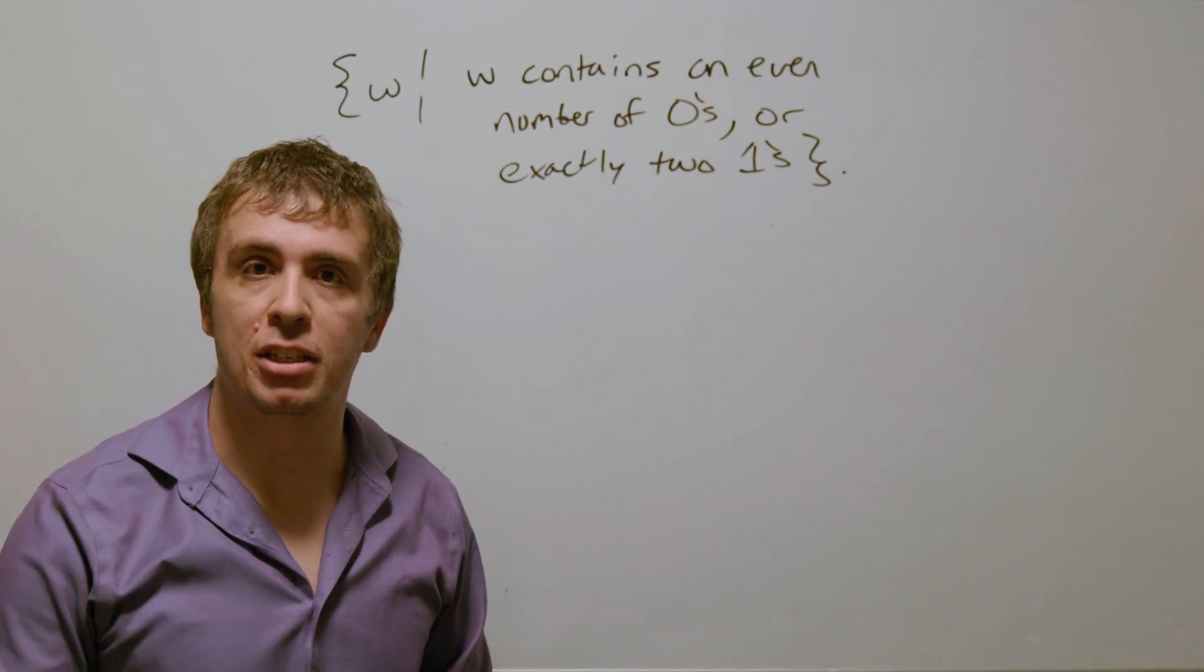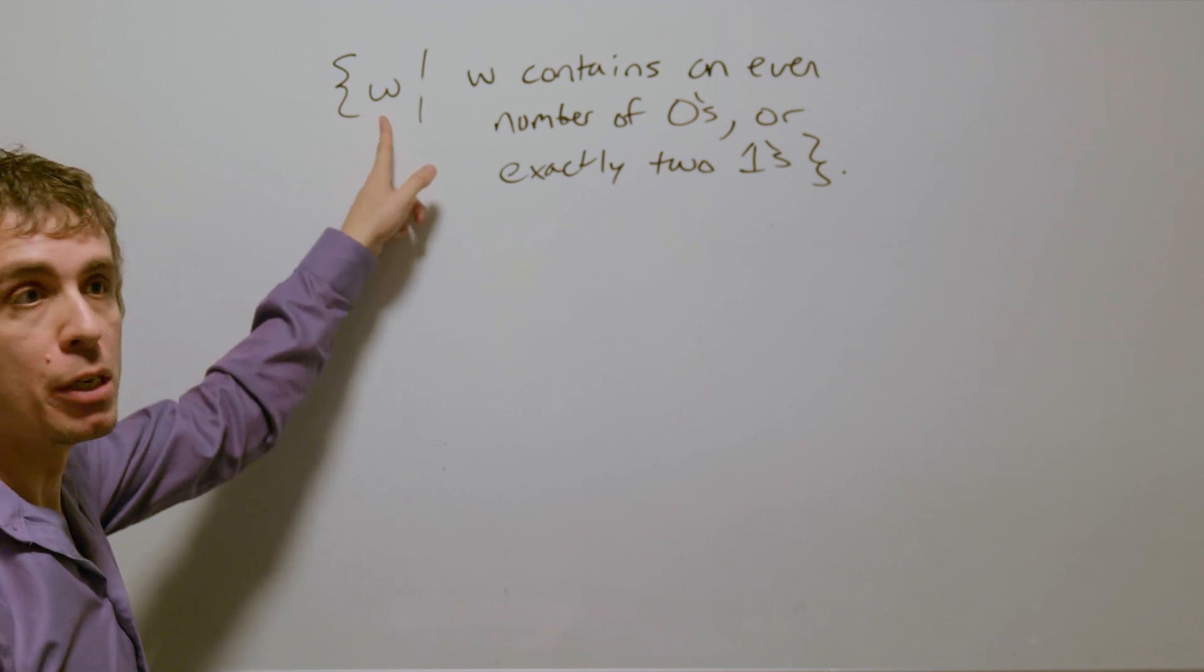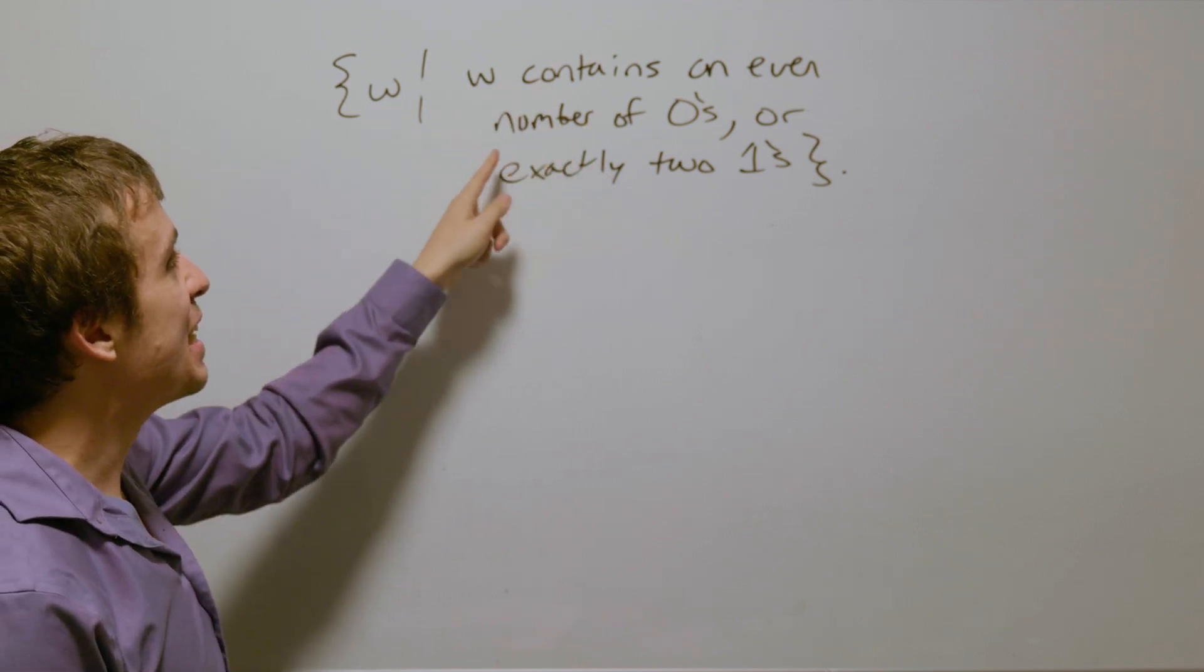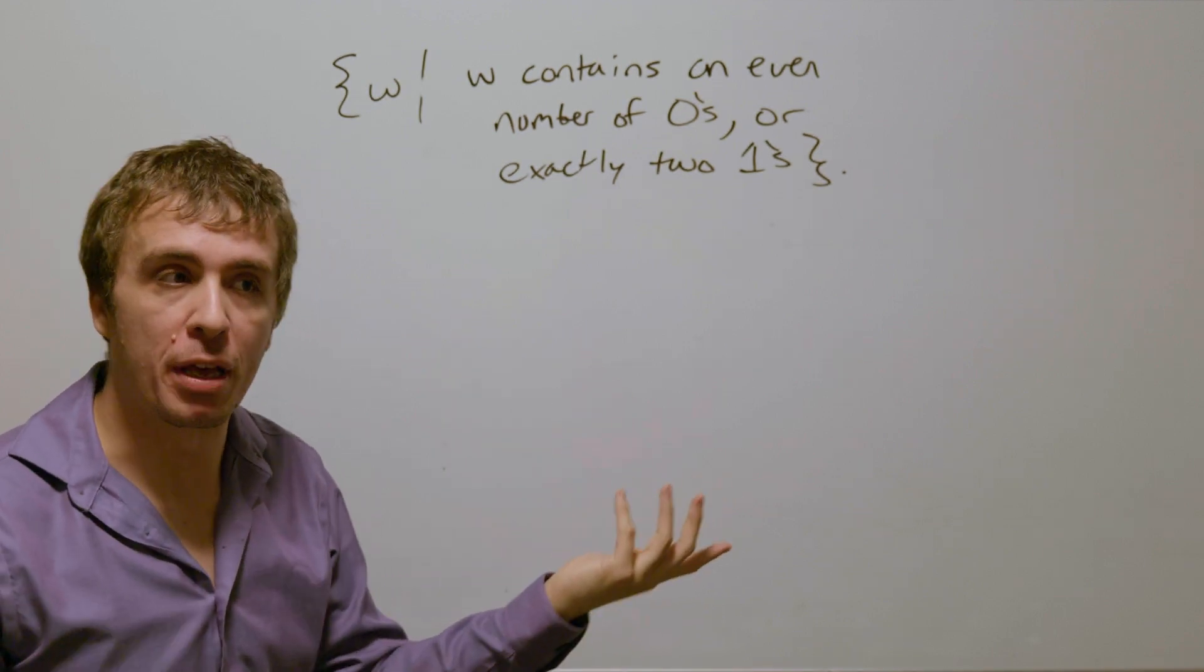Okay, let's make a deterministic finite automaton for this language, which is the set of all binary strings w, such that w contains an even number of zeros, or exactly two ones, or both.